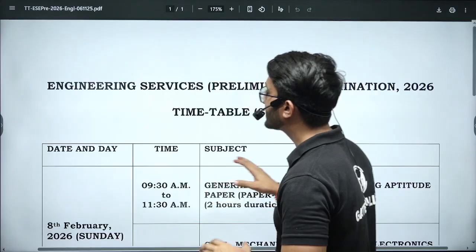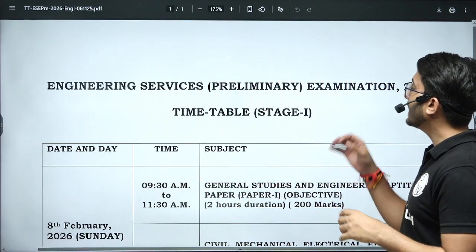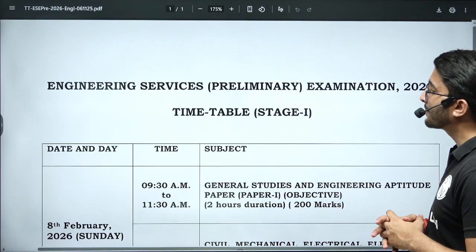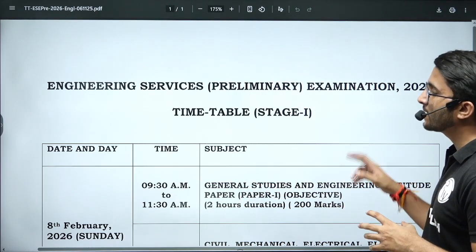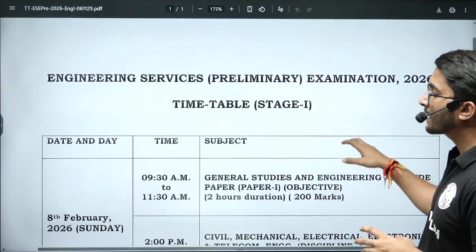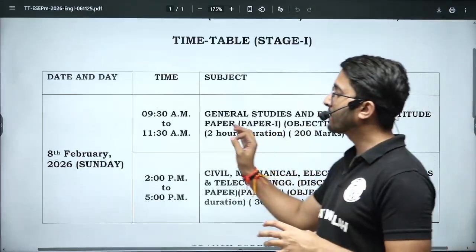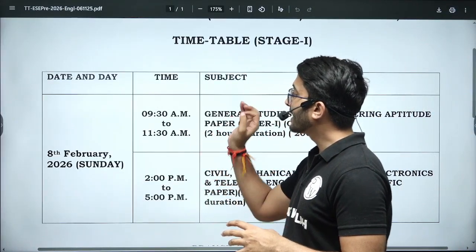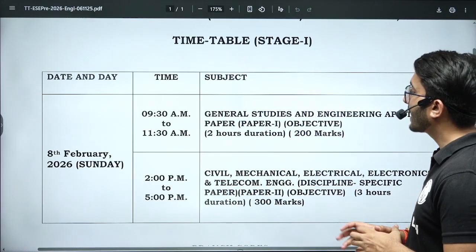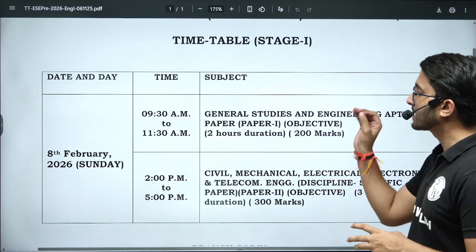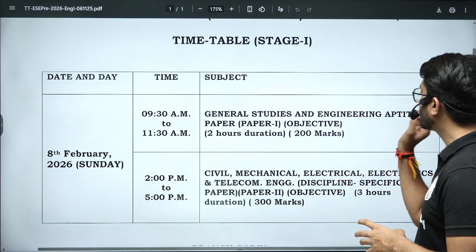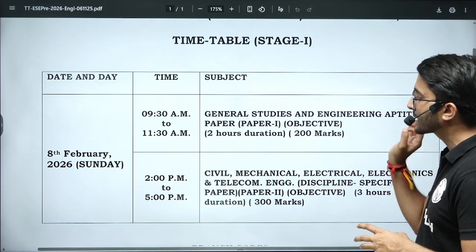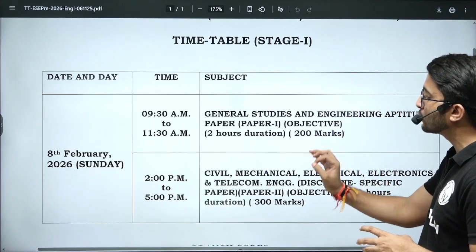Here you can check the Engineering Services Pre-Examination 2026 Timetable Stage 1. On 8th February 2026, Sunday, from 9:30 a.m. to 11:30 a.m., they are going to conduct General Studies and Engineering Aptitude Paper 1 — Objective Type, 2 hours duration.